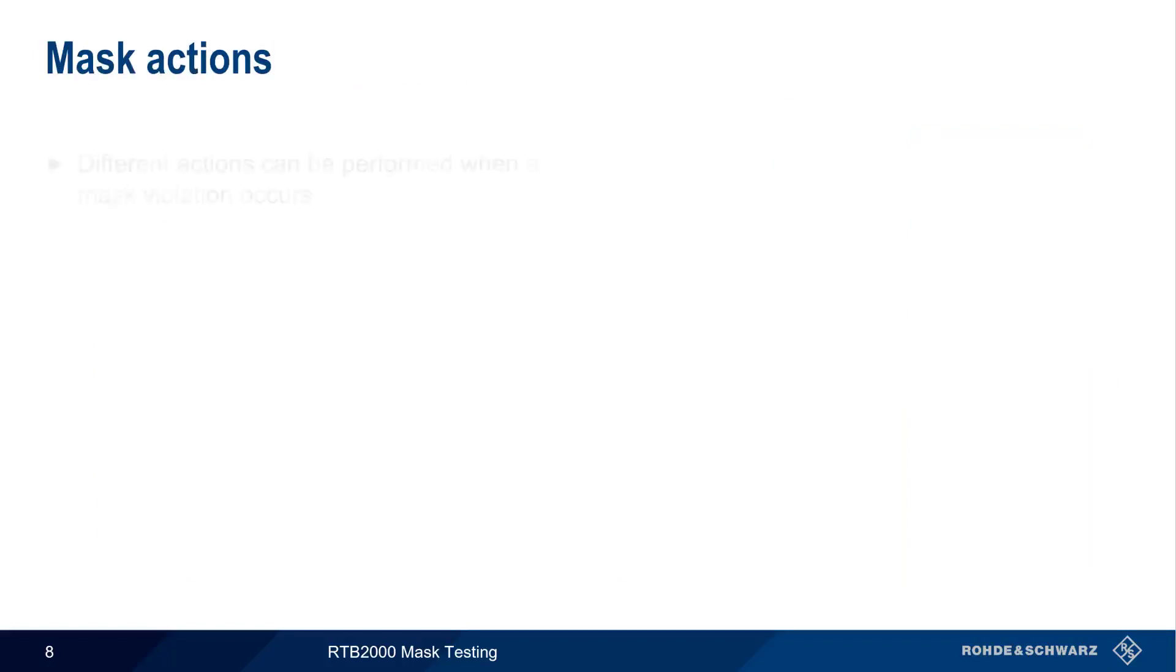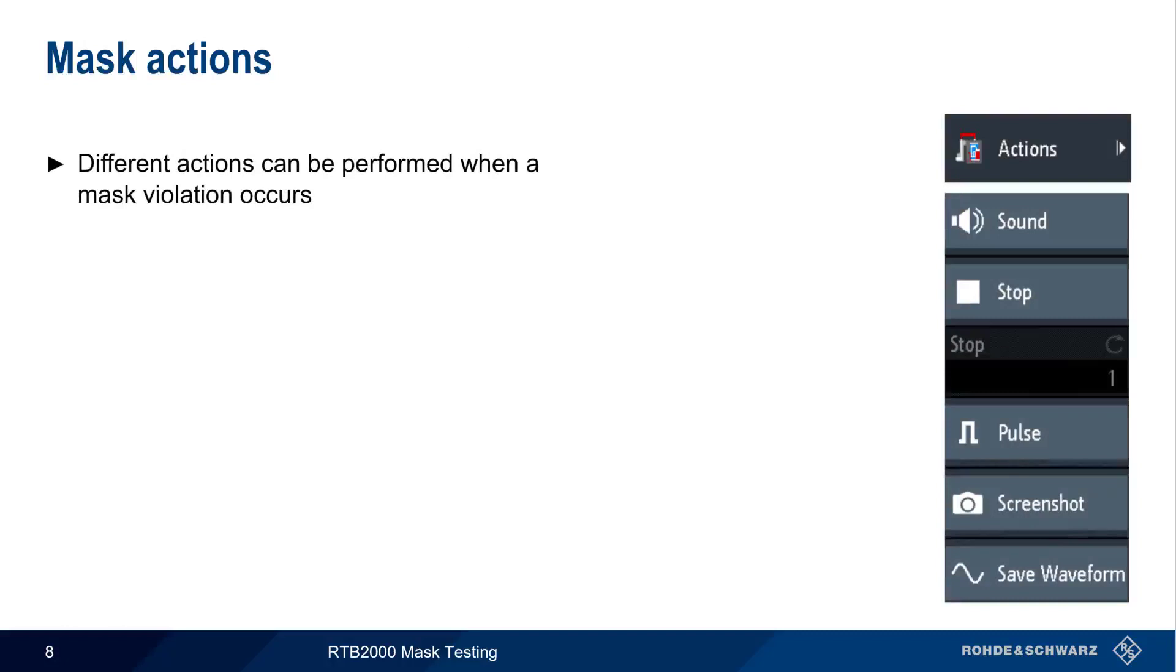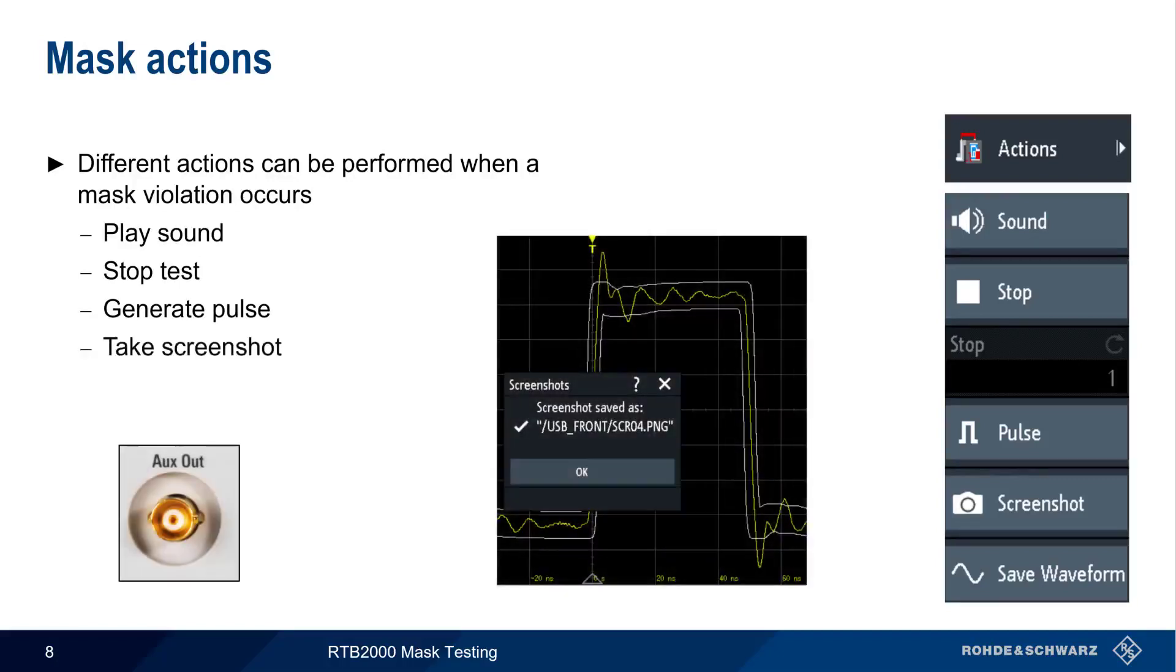The Setup menu is also used to define which actions, if any, should be taken when a mask violation occurs. This includes playing a sound, stopping the test, generating a pulse on the AUX-OUT connector, taking a screenshot, or saving the actual waveform data itself.